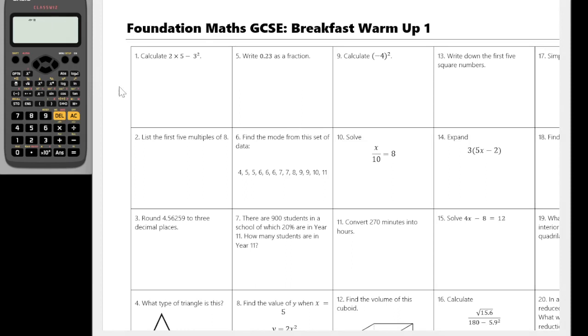Okay, question one. Calculate 2 times 5 minus 3 squared. So this is a calculator question. So 2 times by 5 minus 3 squared gives a value of 1. So our value there is just going to be 1.